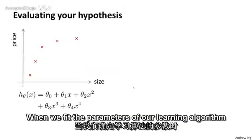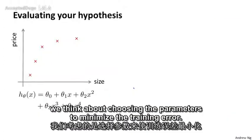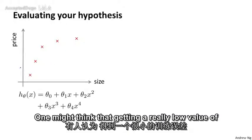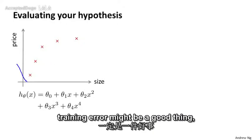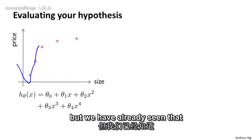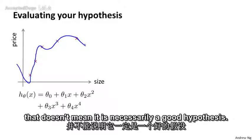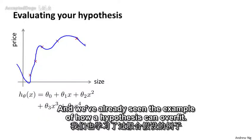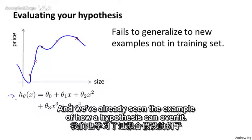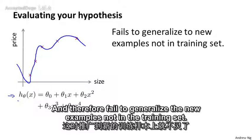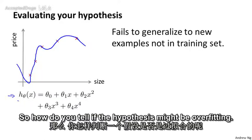When we fit the parameters of our learning algorithm, we think about choosing the parameters to minimize the training error. One might think that getting a really low value of training error might be a good thing, but we've already seen the example of how a hypothesis can overfit and therefore fail to generalize to new examples that are not in the training set. So how do you tell if a hypothesis might be overfitting?